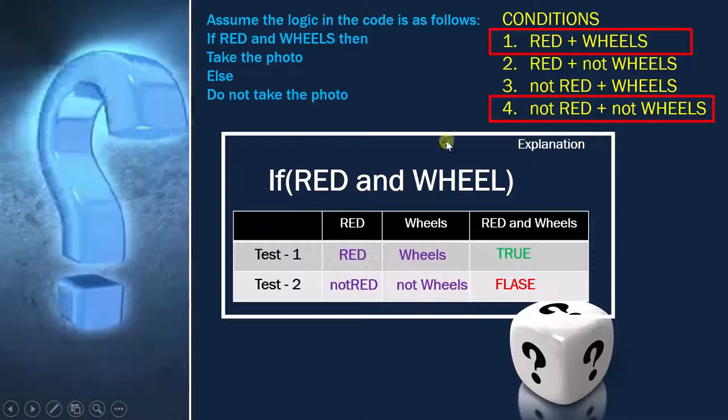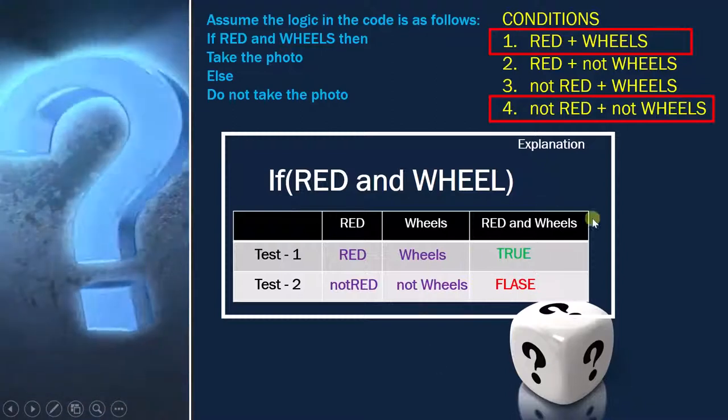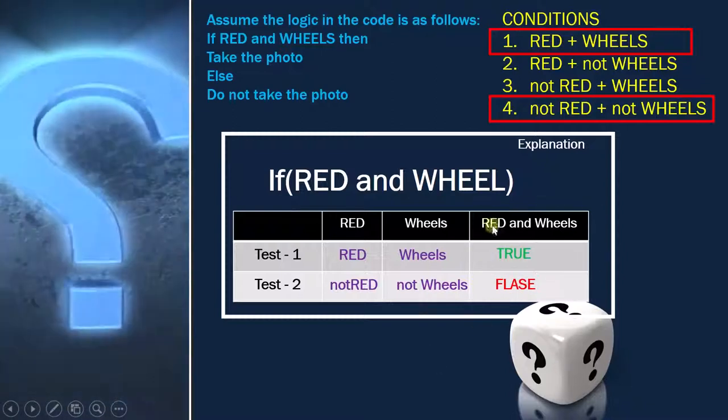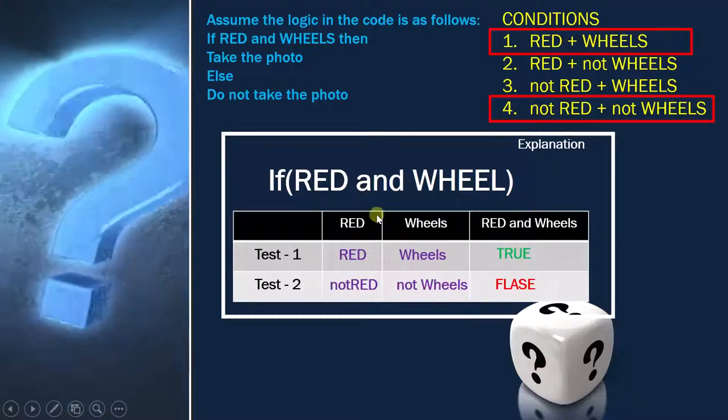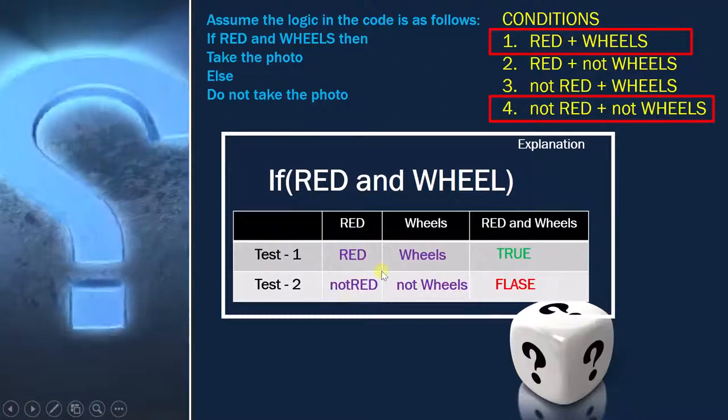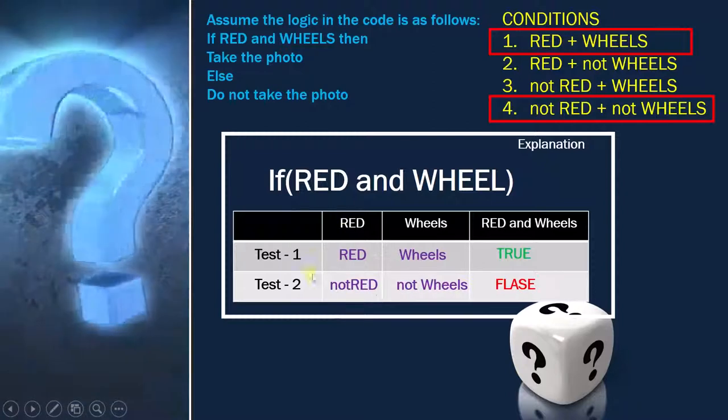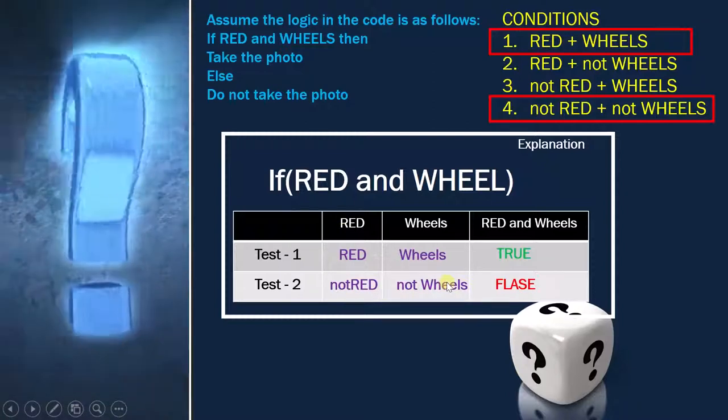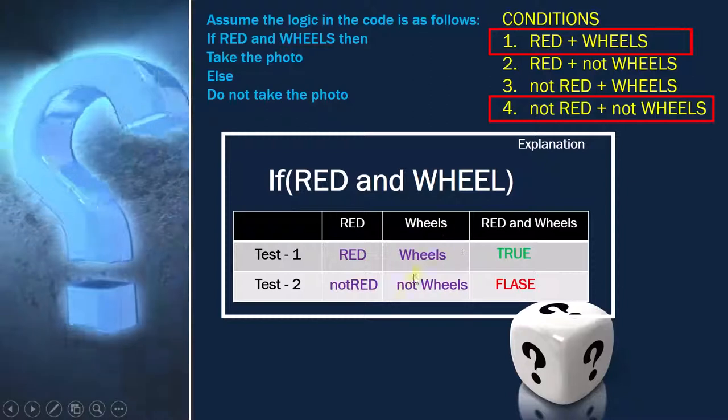If you analyze now, you are achieving 100% decision coverage because for this decision you have true and false. If you see red, you have red and not red, so this is also 100% condition coverage. Wheels, not wheels. This is also 100% condition coverage.